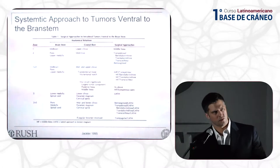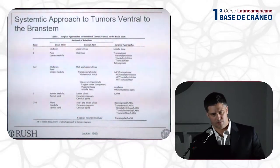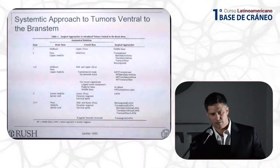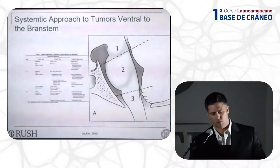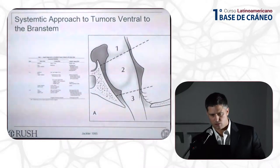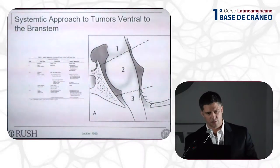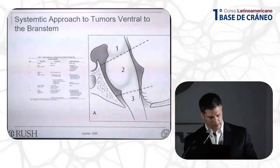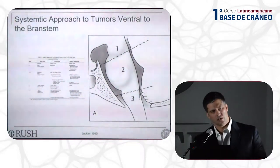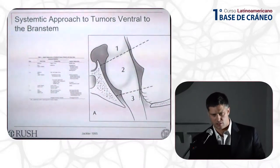Robert Jackler examined these approaches in 1995 and published a paper dividing various trans-temporal approaches based on zones, similar to what James mentioned earlier. Most of these trans-temporal approaches give you access to zone two — the pons and the pontomedullary junction — but he points out that you can combine approaches to gain access to lesions in zones one and two, or zones two and three.